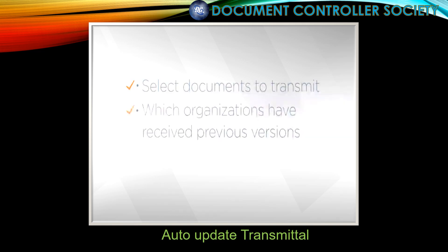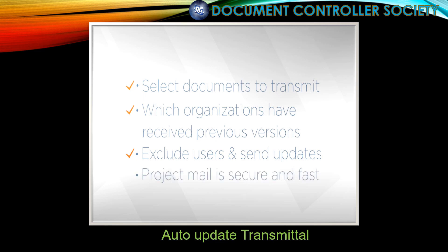You know how to select the documents that you want to transmit. You can view which organisations have been sent previous revisions of the documents and which revisions they've been sent. You can exclude individuals or organisations from the automatic update transmittal. And you can send the updated versions to all selected parties. Remember, all project mail sent and received on Aconex has secure and fast delivery. Bye for now.